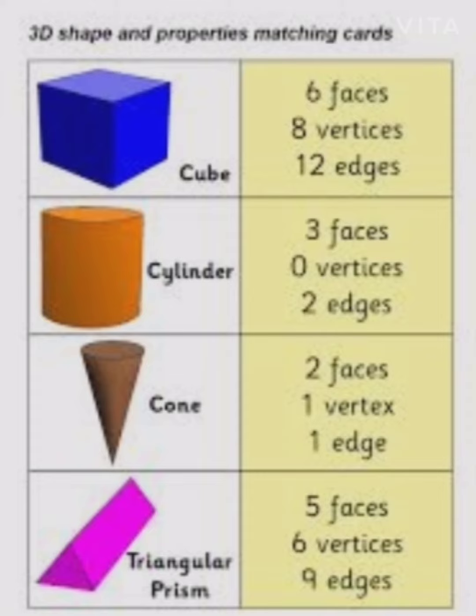Cone: two faces, one vertex, one edge. I have got two prisms. My faces are blue.